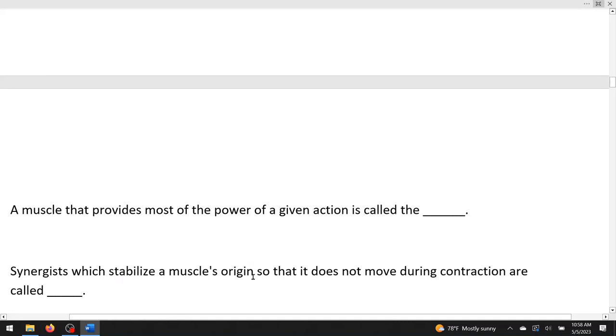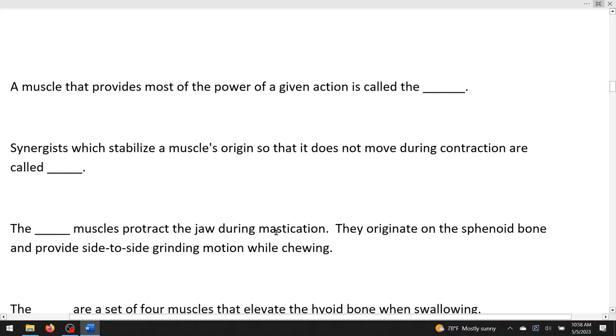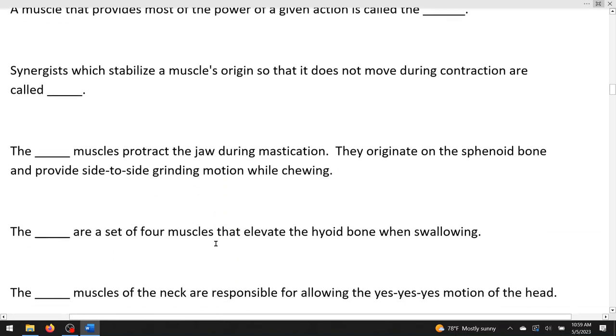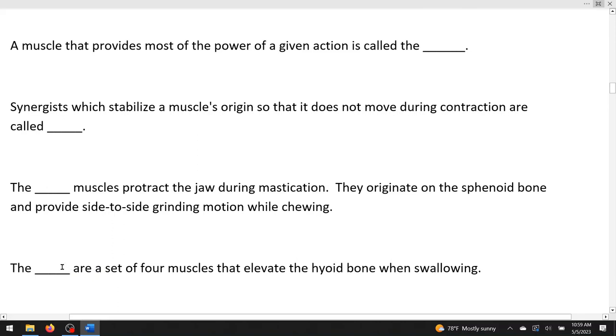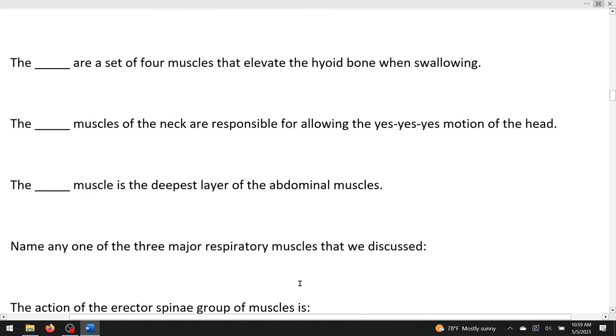Synergists, which stabilize a muscle's origin so that it does not move during contraction, are called. So these are weak synergists holding a muscle in place. Those are called fixators. The blank muscles protract the jaw during mastication. That would be chewing. They originate on the sphenoid bone and provide side-to-side grinding motion while chewing. Those are called the pterygoids. The blank are a set of four muscles that elevate the hyoid bone when swallowing. You would call those the supra-hyoids, even though their actions are much more complicated than that. The blank muscles of the neck are responsible for allowing the yes-yes-yes motion of the head. That's sternocleidomastoid. Be a really good choice there.